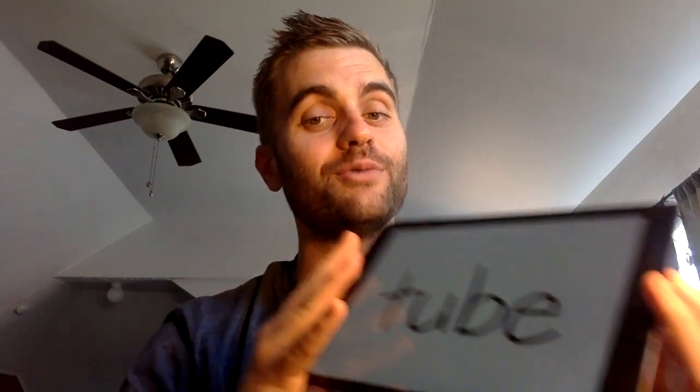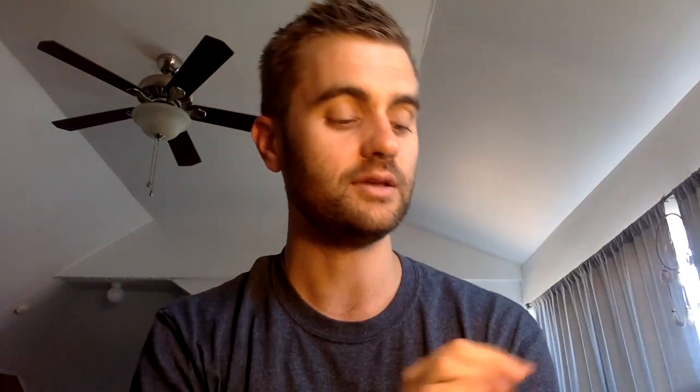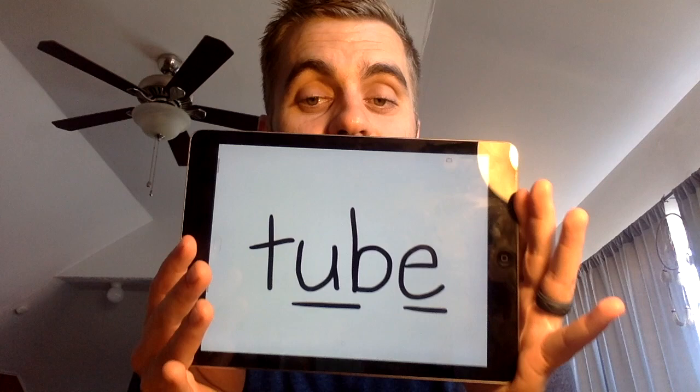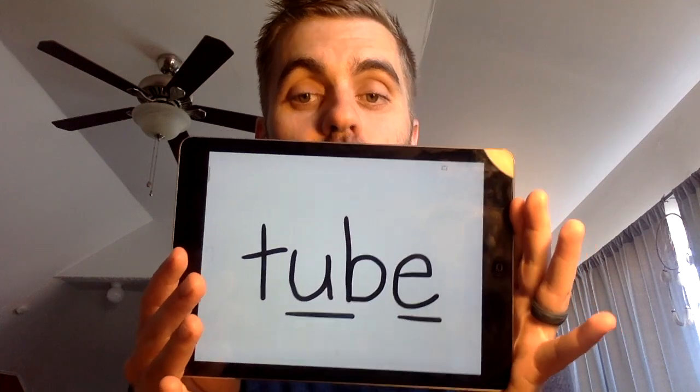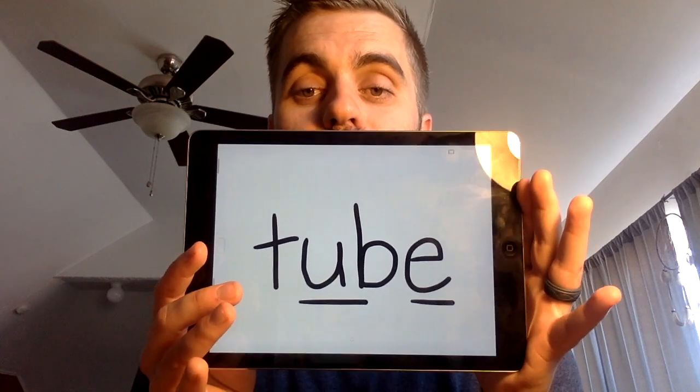Let's segment it one more time: T-U-B. This is how you write the word tube. Notice we have a U with a sneaky E, but this time it makes a different sound. Did you get that one?